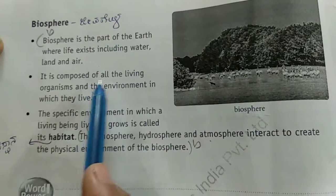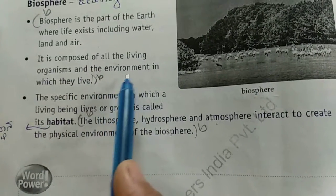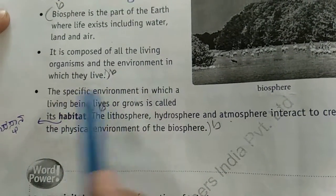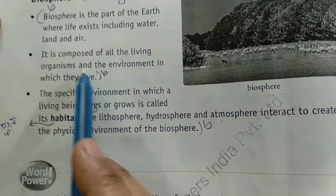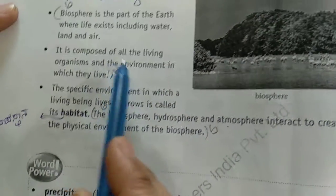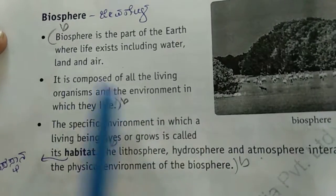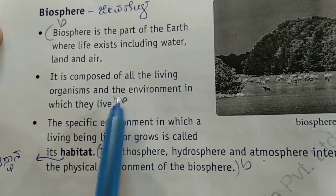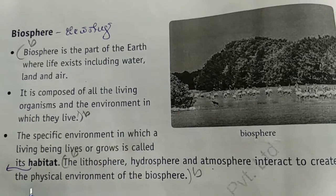It is composed of all the living organisms and the environment in which they live. Yallal living things — pranipakshi lho na yallar yalli vasa maadthi vi andre, yaw environment loo vasa maadthi vandre, biosphere al. Suitable environment loo vasa maadthi vandre.